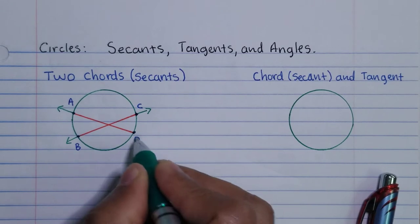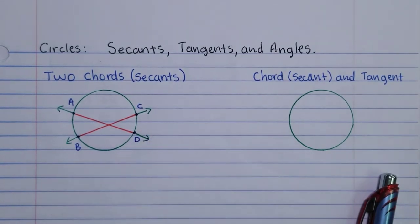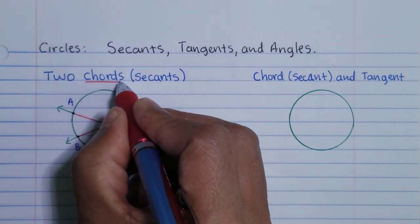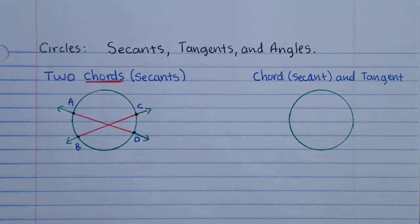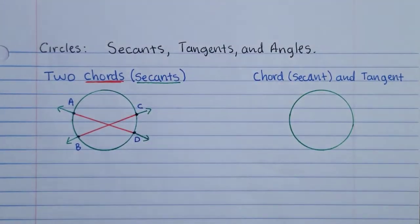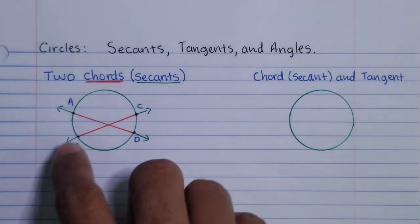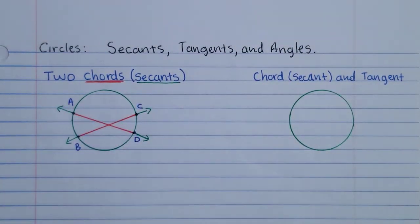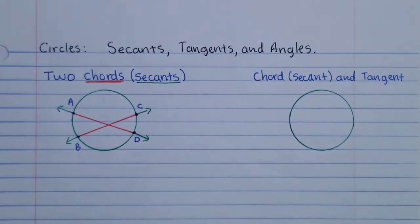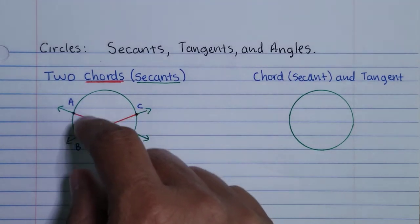The red ones are chords — they have endpoints on the circle. The green ones are secant lines. Chords are segments and secants are lines, but when they intersect inside of a circle they form special angles at the intersection.